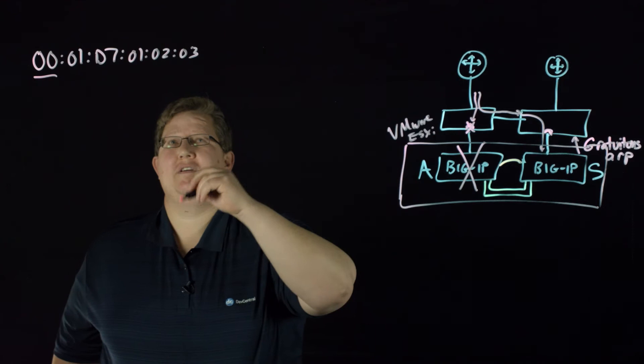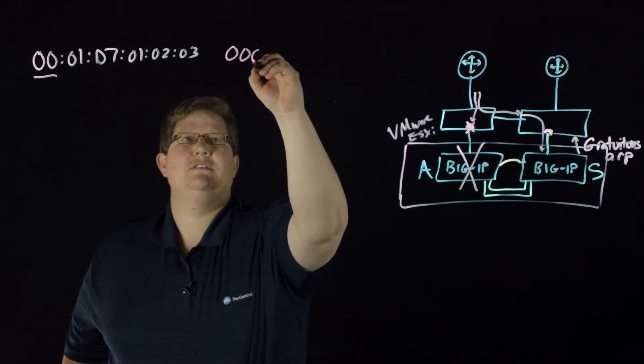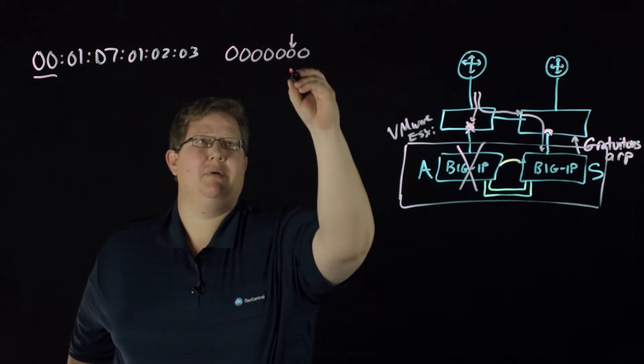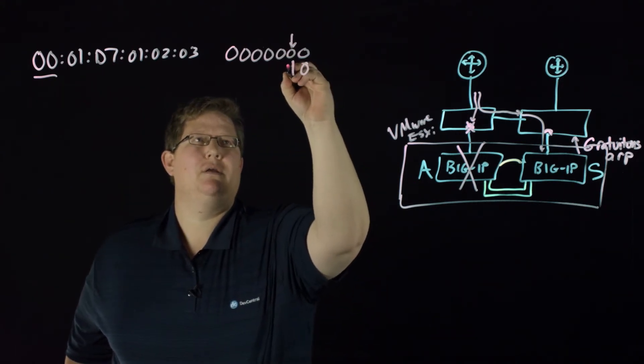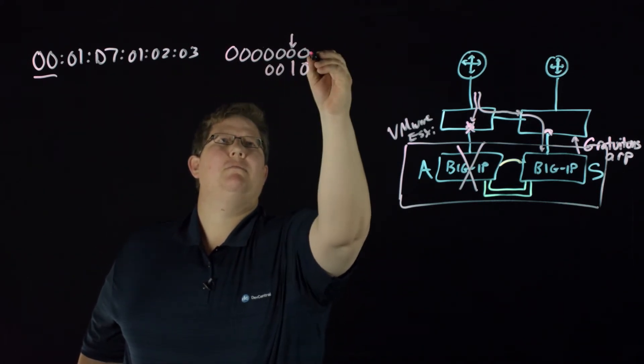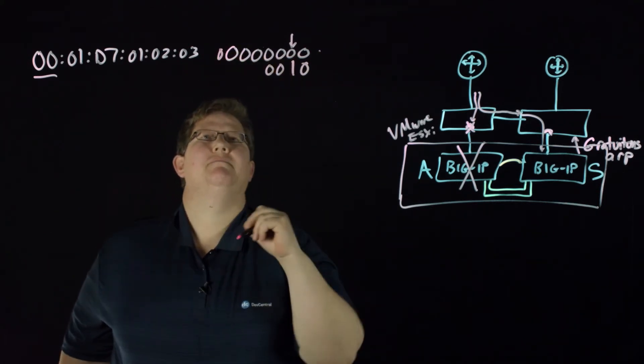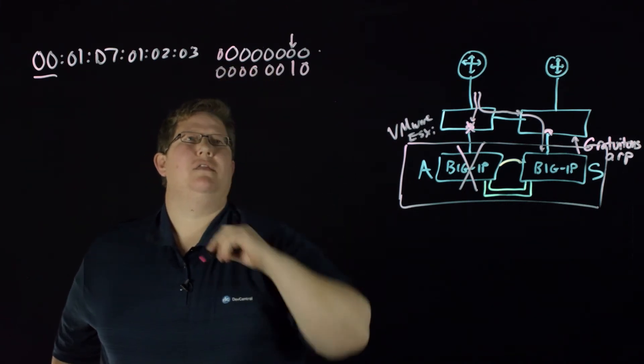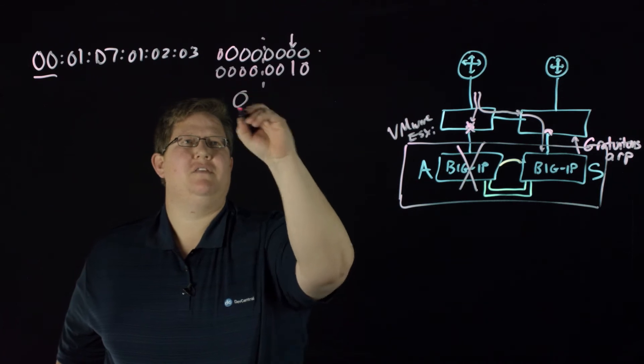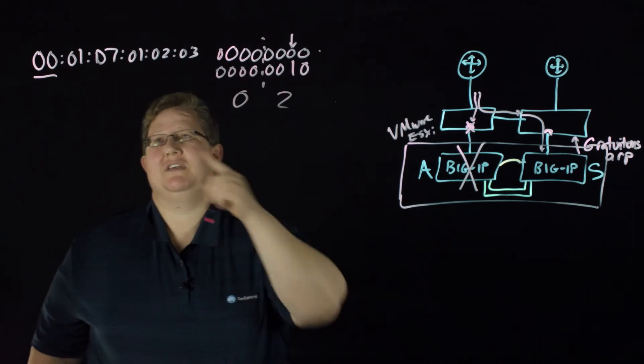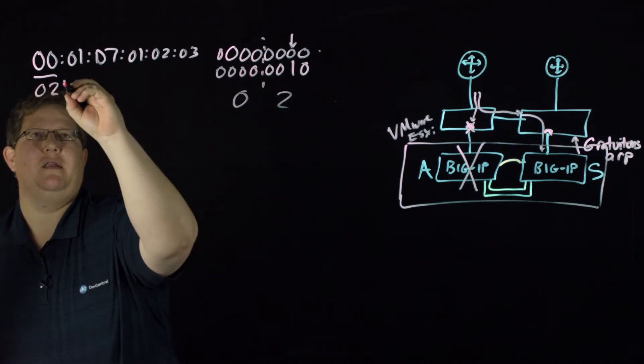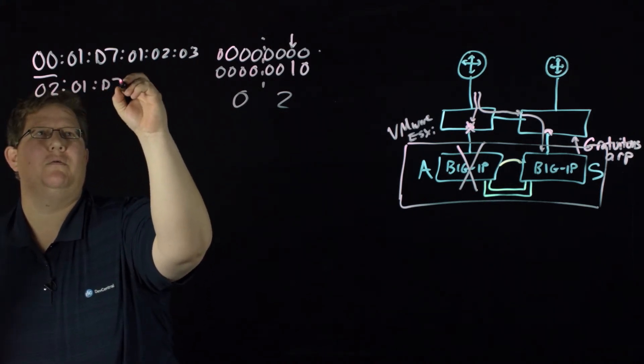So in this case we have 00. If we take that out to all eight bits, it's suggesting you change the second bit. So that would become a one in this scenario. So then if I'm going to convert that to hex, this would be zero and that would be two. So this address would change then from 00 to 02, and then all the rest of this would remain.